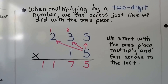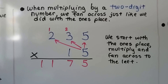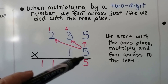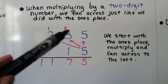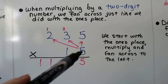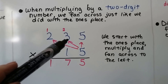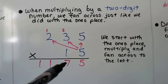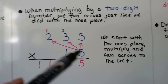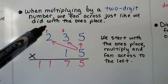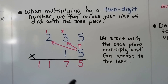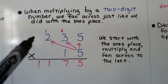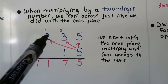When multiplying by a two-digit number, we fan across just like we did with the ones place. We did five times five is twenty-five, carried the two and put the five down. Five times three is fifteen, sixteen, seventeen — put that one up and put the seven down. Then five times two is ten, and one more is eleven. So we started with the ones place and multiplied, fanning across.